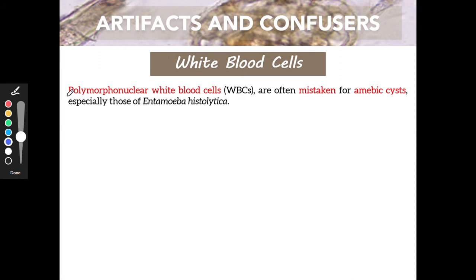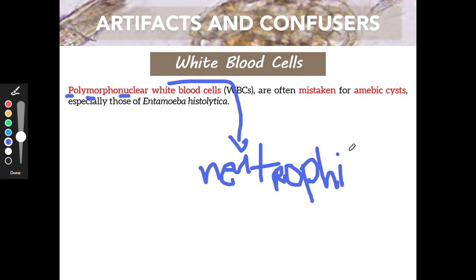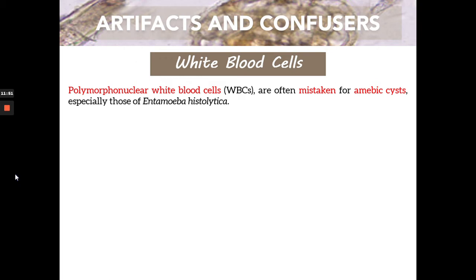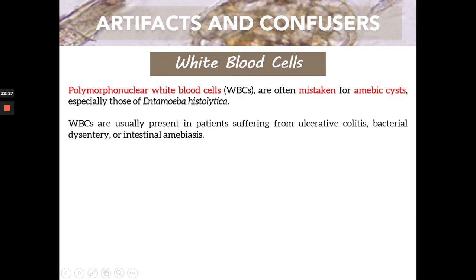PMNs are polymorphonuclears, and usually when we say PMNs we refer to your neutrophils. These neutrophils, if you recall their appearance from your intro to MedTech or HIS, may be mistaken as an amoebic cyst, especially those of Entamoeba histolytica. Their sizes in micrometers are actually close, making it very difficult to differentiate WBCs from amoebic cysts.